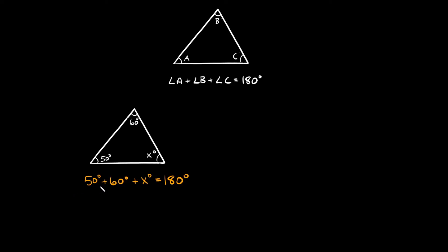Simplifying this, 50 plus 60 equals 110 degrees, plus x equals 180. Now solving for x, I need to subtract 110, and what you do to one side of an equation you do to the other. So 110 minus 110 goes to zero, and we have x equals 180 minus 110, which is 70. So x equals 70 degrees, meaning the missing angle is 70 degrees.